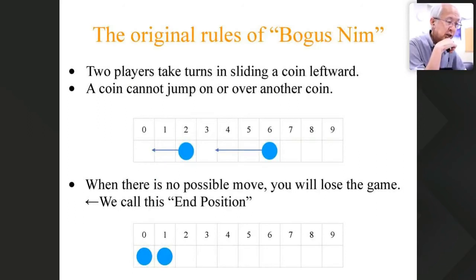The original rule of Bogus Nim: Two players take turns in sliding a coin leftward. And a coin cannot jump on or over another coin. And when there is no possible move, you will lose the game. We will call this add position. So it's a very simple game and maybe even elementary school students can play.